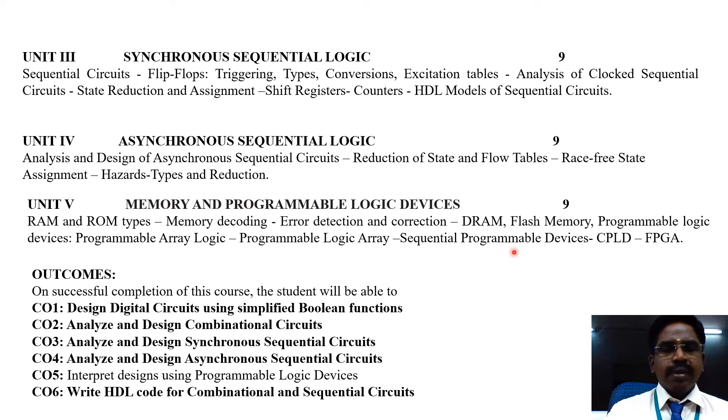Next, course outcome. As the course objective gives the overall view, and course outcomes gives the successful completion of this course. First one is design digital circuits using simplified Boolean functions. Second outcome is analyze and design combinational circuits. Third outcome is analyze and design synchronous sequential circuits. Fourth outcome will be analyze and design asynchronous sequential circuits. Fifth outcome will be interpret design using programmable logic devices. And, the sixth outcome will be, you can able to write hardware description language code for combinational and sequential circuits.